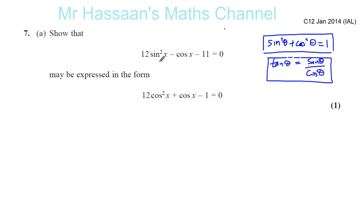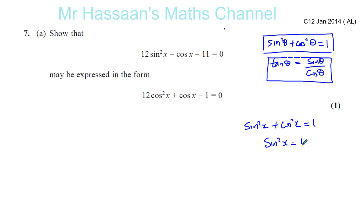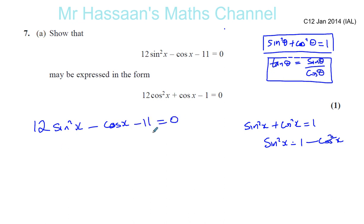So basically what's happened here is the sine squared x has gone, and you can see there's now cosine squared x and cosine x. We have sine squared x plus cosine squared x equals 1, so if we express sine squared x in terms of cosine squared x, we get sine squared x equals 1 minus cosine squared x.